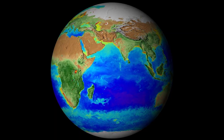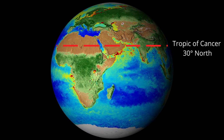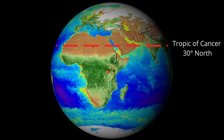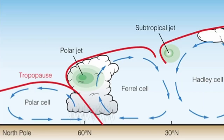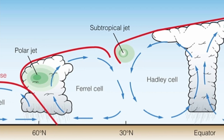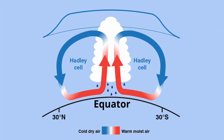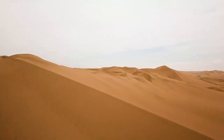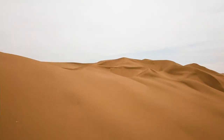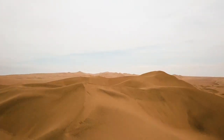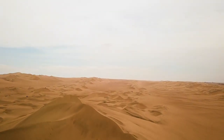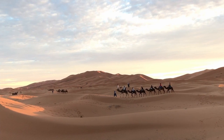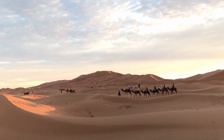These subtropical deserts are found along the Tropic of Cancer, between 15 and 30 degrees north of the equator, or along the Tropic of Capricorn, between 15 and 30 degrees south of the equator. The Hadley Cell drives subtropical deserts by lifting moist air at the equator, causing it to cool, condense, and release rainfall. As this dry, descending air then reaches around 30 degrees latitude, it warms and suppresses cloud formation. This descending motion creates high-pressure zones, inhibiting further moisture and leading to arid conditions — this is the main system that prevents rainfall in the Sahara Desert.